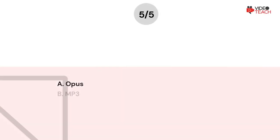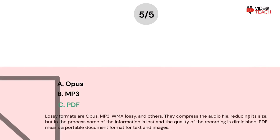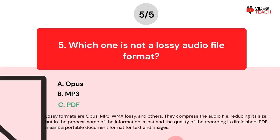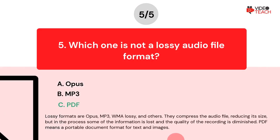The correct answer is Option C. Lossy formats are Opus, mp3, wma lossy, and others. They compress the audio file, reducing its size, but in the process some of the information is lost and the quality of the recording is diminished. PDF means a portable document format for text and images.